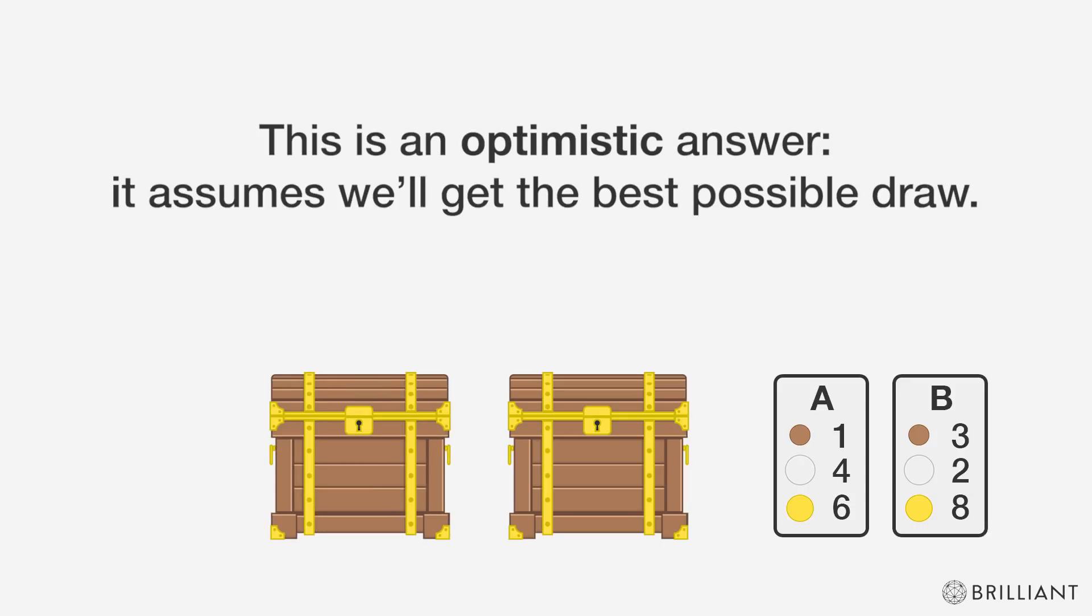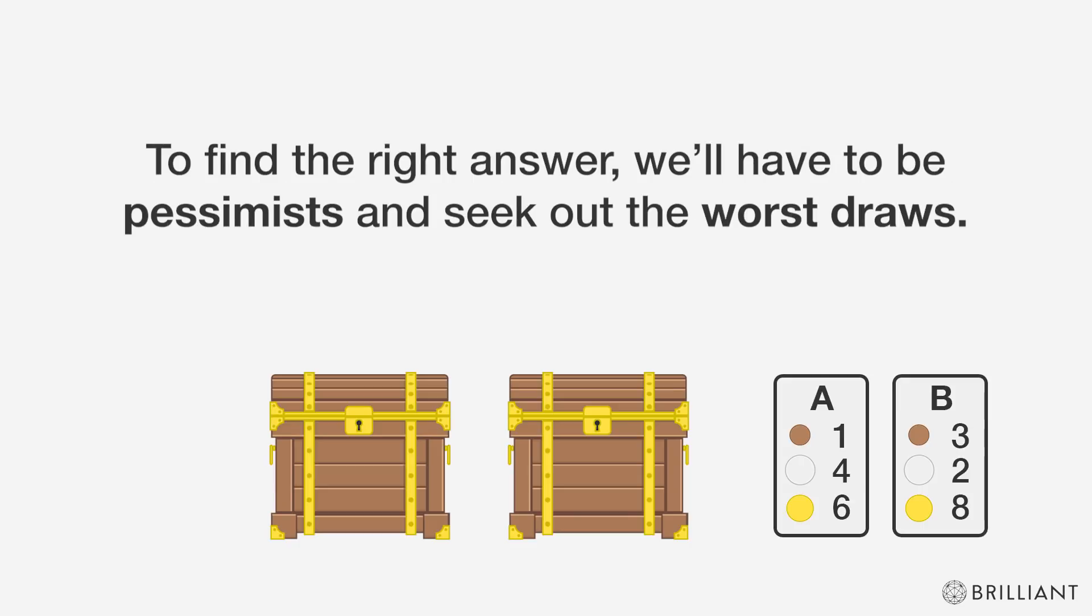Two coins is an optimistic answer. It assumes we'll get the best possible draw. To find the right answer, we'll have to be pessimists and seek out the worst draws.